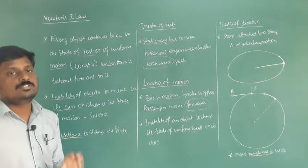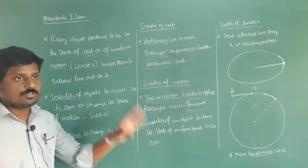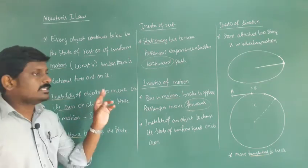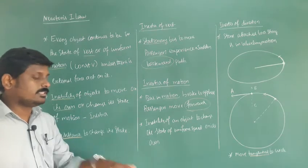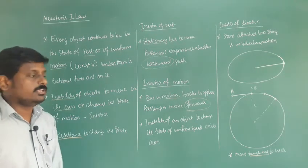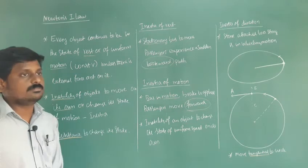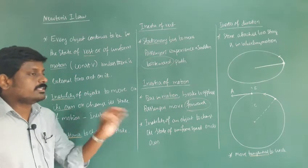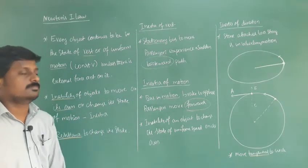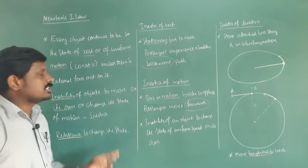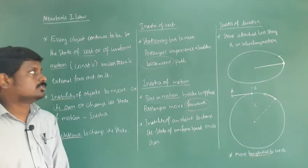Every object tends to be in a state of rest or uniform motion unless an external force acts on it. For example, a book is on the table — if it is at rest and not disturbed, it will remain at rest for an infinite amount of time. A force must act on it for the book to move.